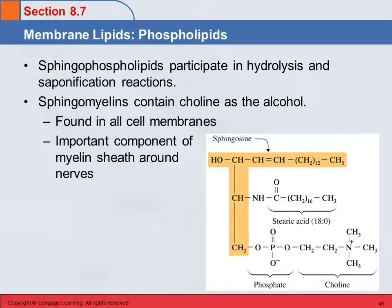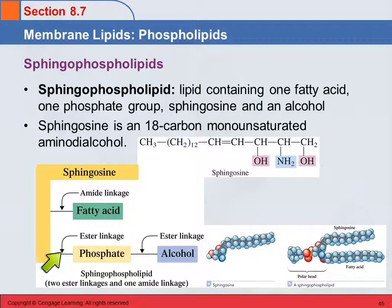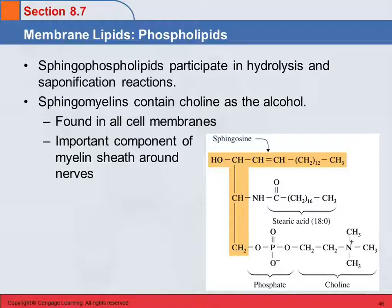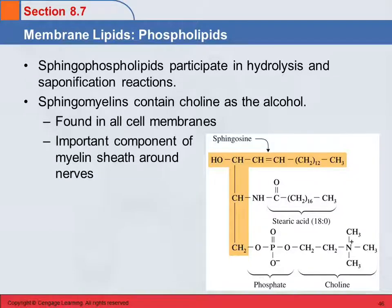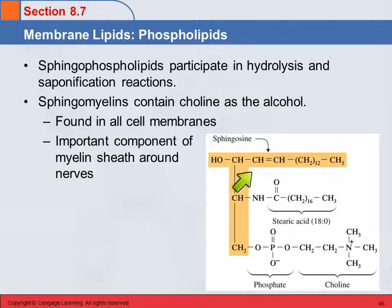These do participate in hydrolysis and saponification — the ester linkages can be hydrolyzed and saponified. One group of sphingophospholipids is called sphingomyelins, and these have choline as the alcohol. They're a very important component of the myelin sheath around your nerves. In a sphingomyelin example, you have choline as the alcohol attached to the phosphate, and the fatty acid in this case is stearic acid. The top tail is not a separate fatty acid — it's actually part of the sphingosine molecule.